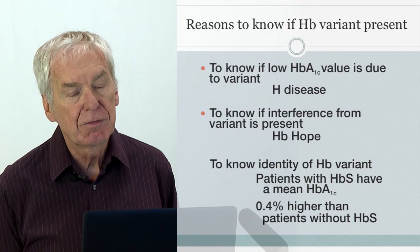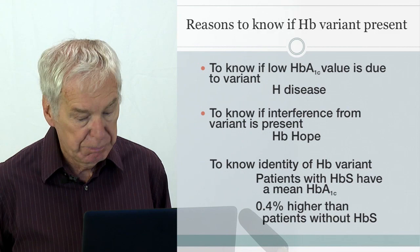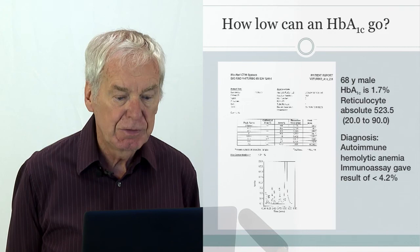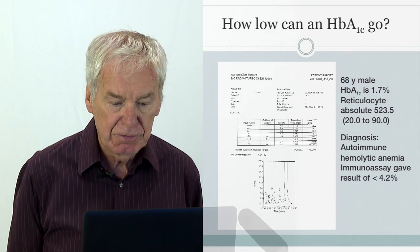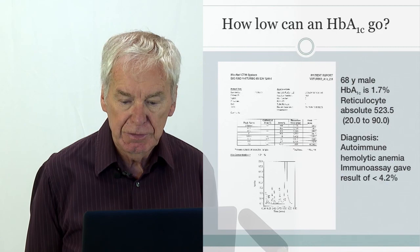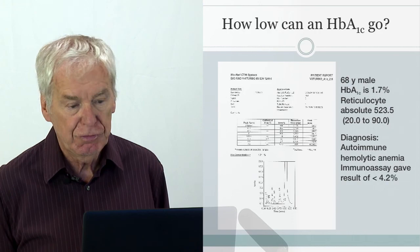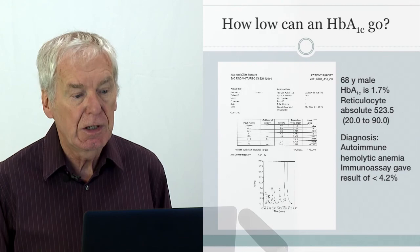There is tremendous controversy in the literature on this point. The lowest A1c we have ever seen was 1.7%. The absolute reticulocyte count was tremendously high — this patient had autoimmune hemolytic anemia. An immunoassay gave a result of less than 4.2% and couldn't tell us how low it actually went, whereas with HPLC we were able to determine the true value.